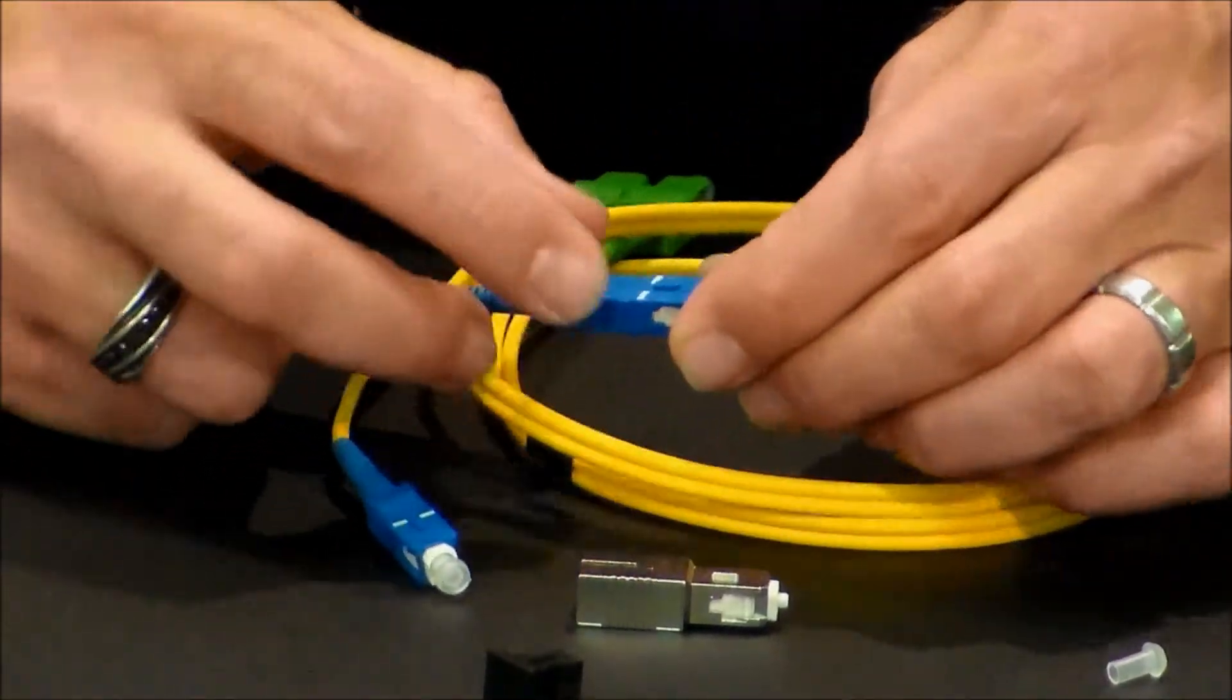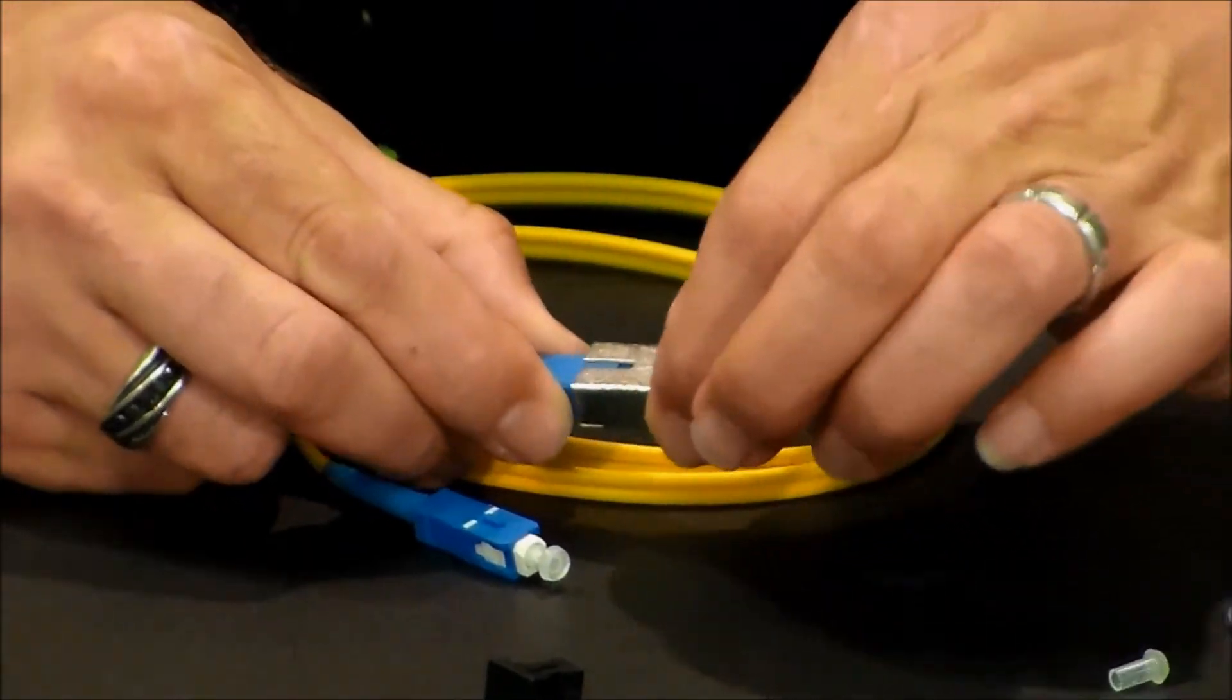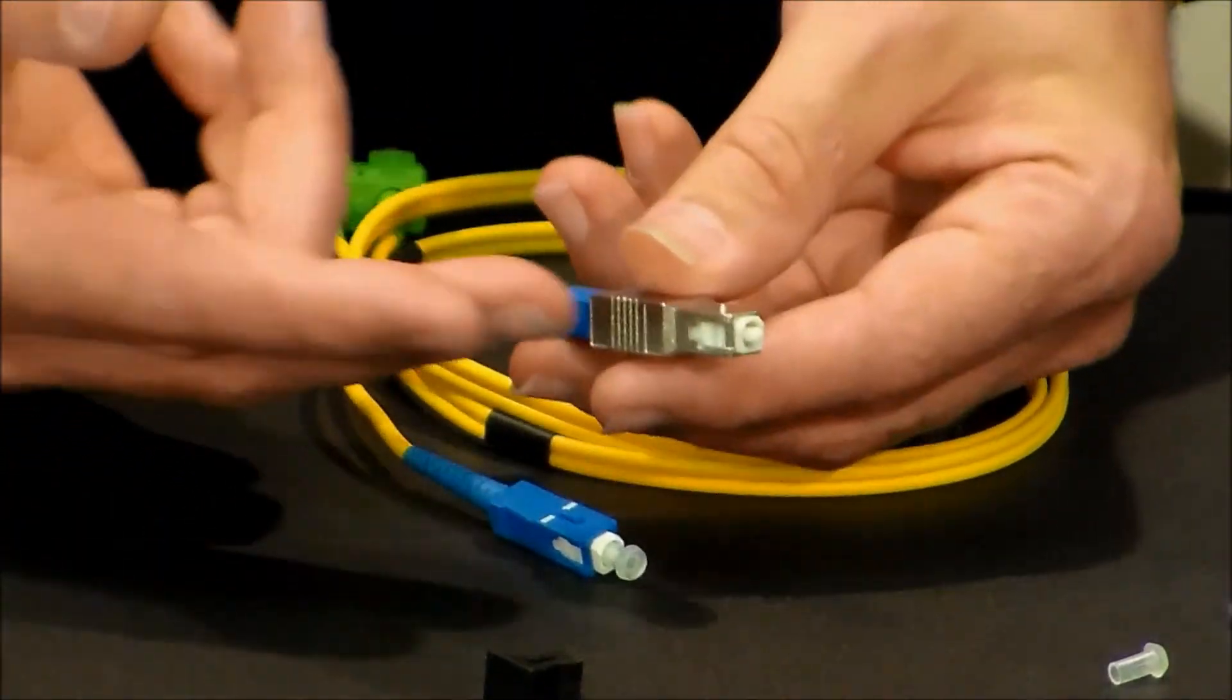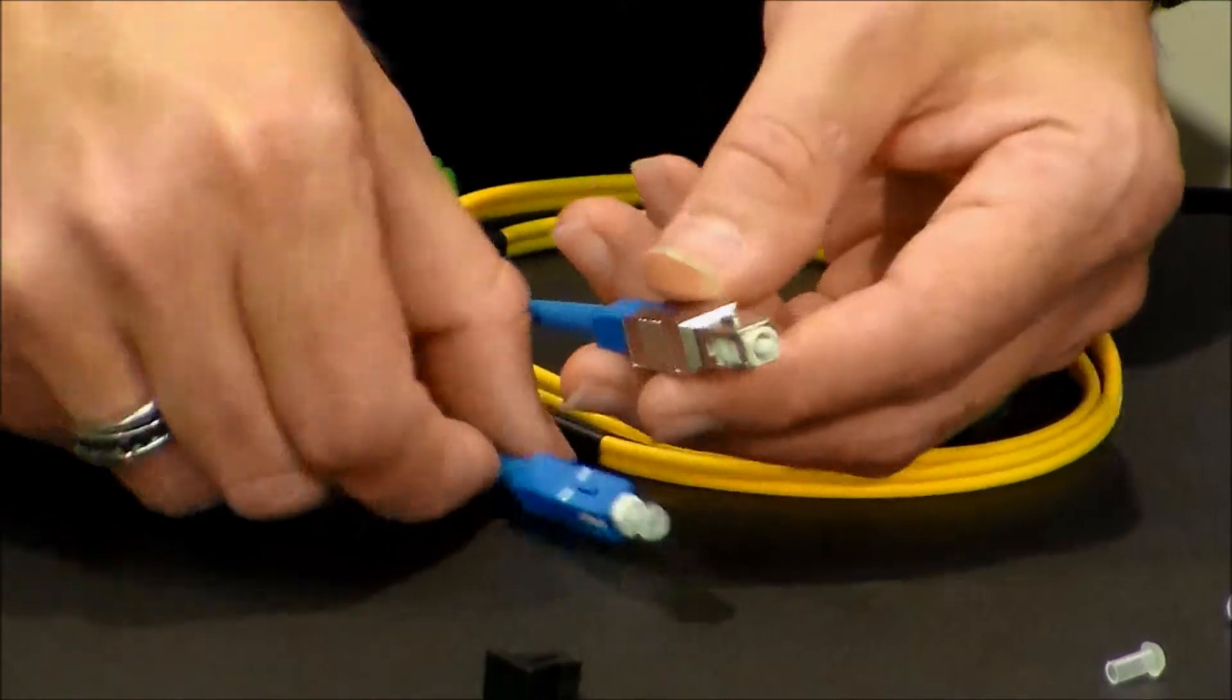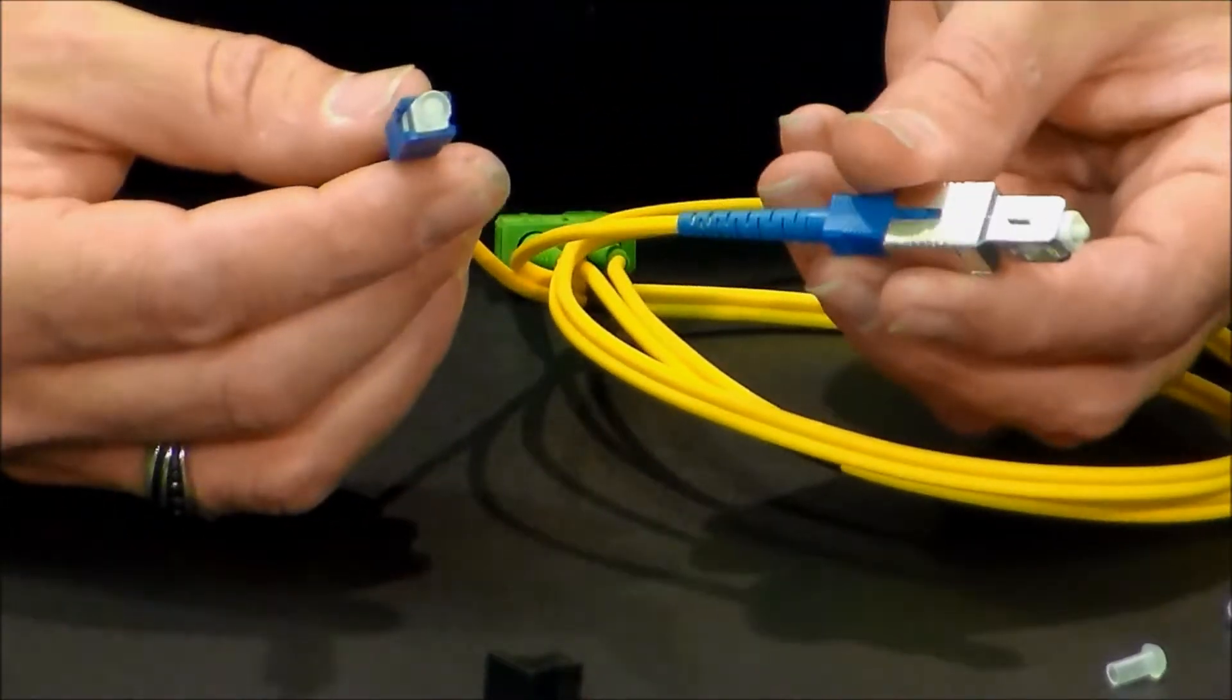You take your optical cable with your standard SC connector and you connectorize it like so. And now the attenuator is built in and you're able to plug it directly into your fiber optic circuit and now you have your attenuation.